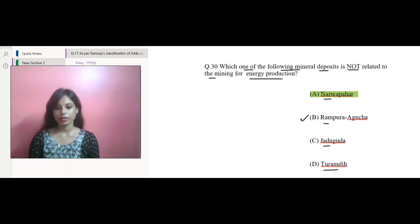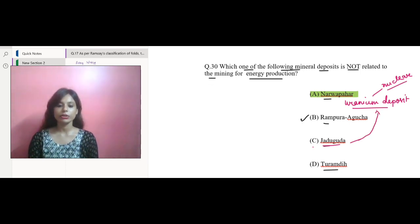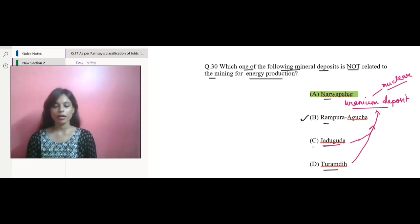Talking about the other options, Narwapahar is a uranium deposit primarily used for nuclear energy production. Jaduguda is also a uranium deposit used for nuclear energy production. So Jaduguda and Narwapahar both are same. Next we have Turamde, also a uranium deposit absolutely similar to Narwapahar and Jaduguda. So we have the only odd one out, that's B.